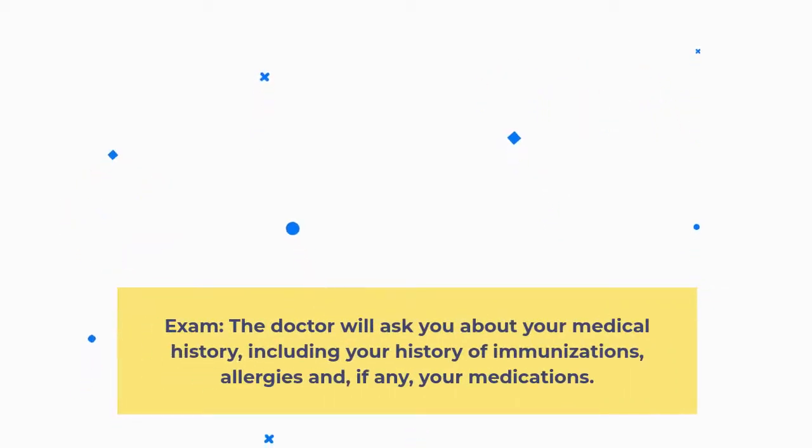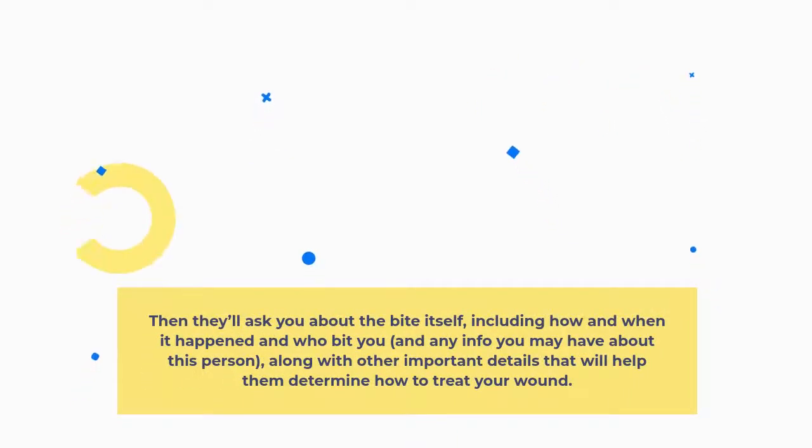Exam: the doctor will ask you about your medical history, including your history of immunizations, allergies and, if any, your medications. Then they'll ask you about the bite itself, including how and when it happened and who bit you, and any info you may have about this person, along with other important details that will help them determine how to treat your wound.